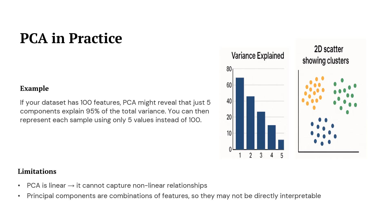But PCA does have a few limitations. First, PCA is a linear method, so it can't capture complex non-linear relationships in the data. Second, the principal components are combinations of original features, which means they are sometimes hard to interpret directly. Even with these limitations, PCA remains one of the most powerful and widely used dimensionality reduction techniques in machine learning.